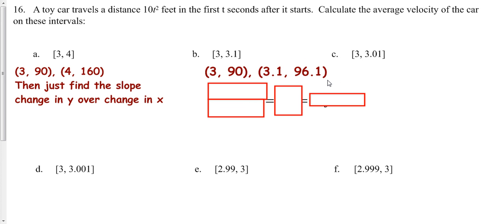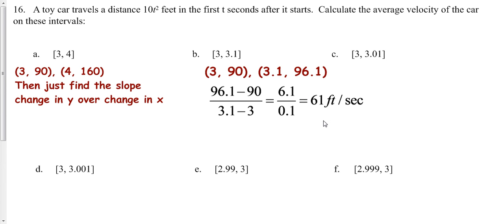So then all we have to do is our slope. Change in our y's divided by change in our x's. So then we get 6.1 over 0.1, which gives us 61.